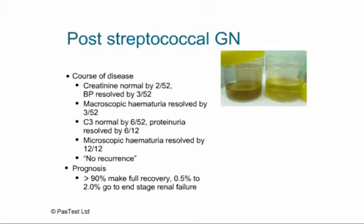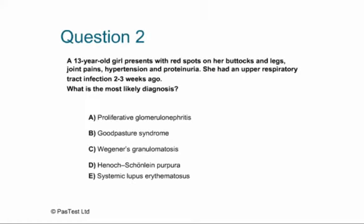Question 2: A 13-year-old girl presents with red spots on her buttocks and legs, joint pains, hypertension and proteinuria. She had an upper respiratory tract infection 2–3 weeks ago. This is a best of 5 — what's the most likely diagnosis? Options are: A) proliferative glomerulonephritis, B) Goodpasture syndrome, C) Wegener's granulomatosis, D) Henoch-Schönlein purpura, or E) systemic lupus erythematosus.